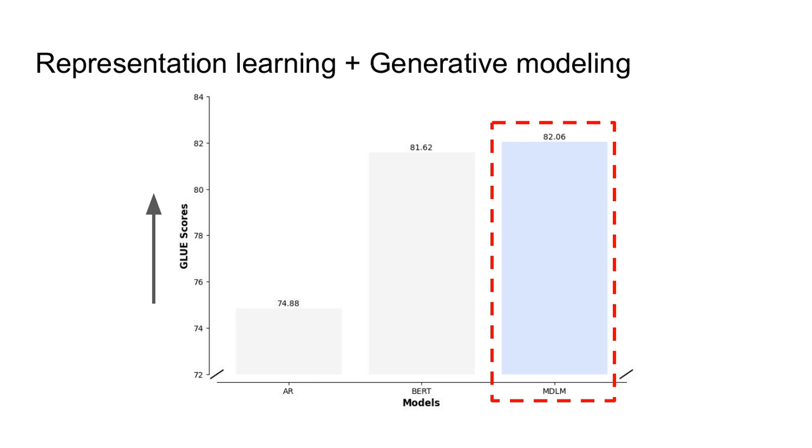One nice property of this style of parallel generation is that it can also be used for representation learning. The objective is relatively close to the standard BERT objective, and as such, it can be fine-tuned in a similar way to BERT. We find that doing so leads to significantly better GLUE scores than autoregressive models, and is able to capture the representation learning properties of BERT while also maintaining the ability to do generative modeling.